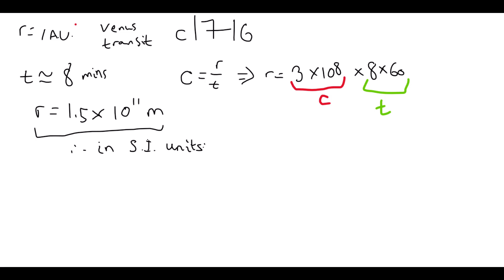Alright, we now have everything we need to find the mass of the Sun, so let's substitute all the numerical values into our derived expression. Again, I'm being careful to convert everything into SI units.